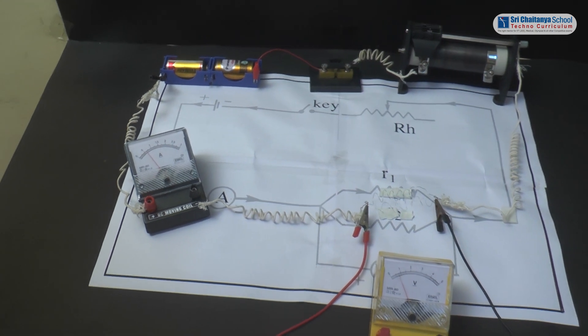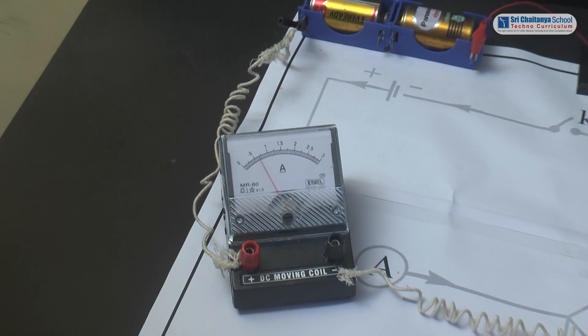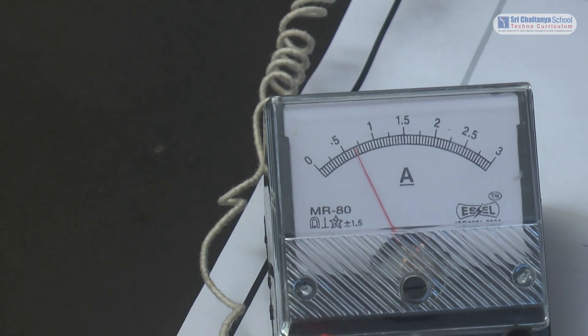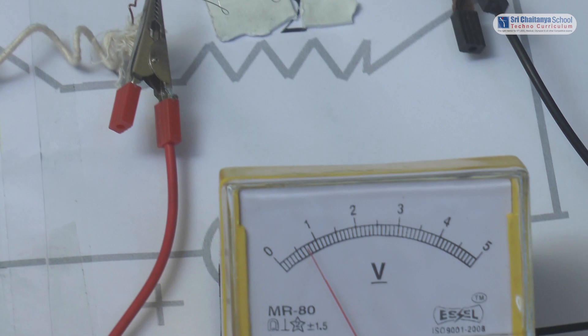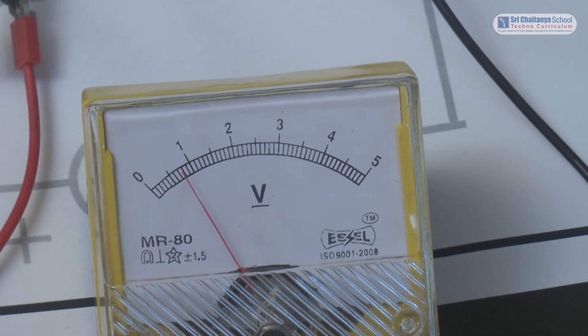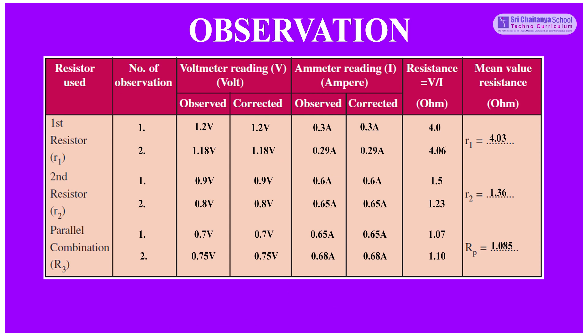When the first and second resistors are connected in parallel, you can observe the observations in tabular form. In trial 1: ammeter reading is 0.65 Ampere, voltmeter reading is 0.7 Volts, and the resistance is 1.07 Ohm. In trial 2: ammeter reading is 0.68 Ampere, voltmeter reading is 0.75 Volts, and the resistance is 1.10 Ohm. The mean value of resistance Rp is equal to 1.085 Ohm.